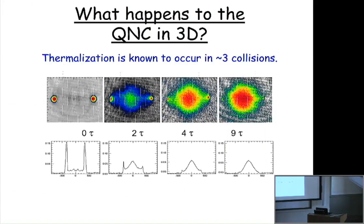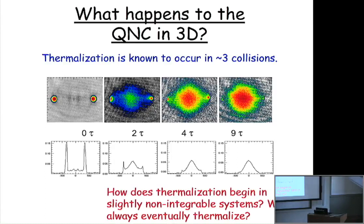There are collisions happening: if you do the same Newton's cradle experiment without the tubes and collide two groups of atoms together in three dimensions, after about three collisions per particle the atoms thermalize. After nine oscillations — even though the density is much lower than in the tightly confined tubes — thermalization is observed. So the question is: we've seen it mostly doesn't thermalize, but will it ever eventually start to thermalize, and what will it do?